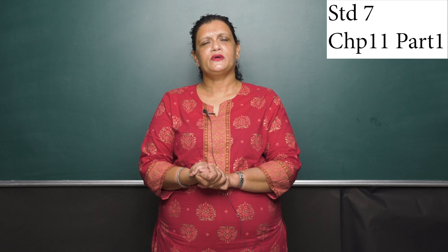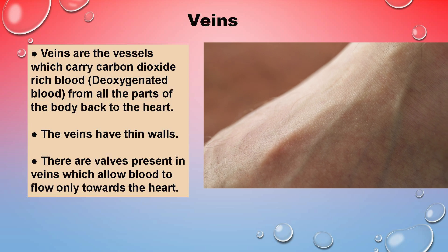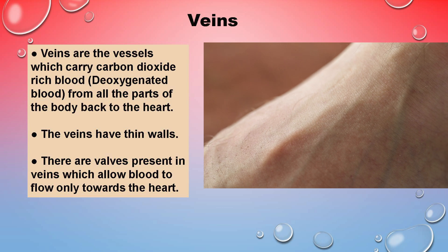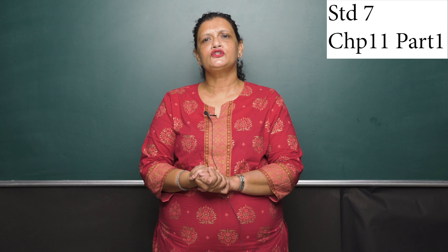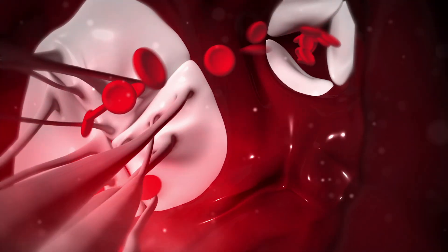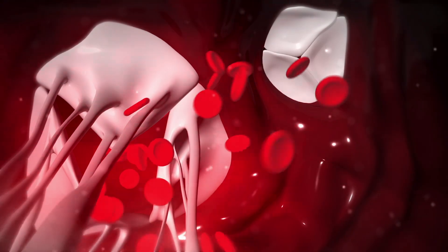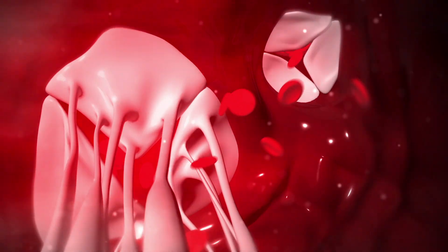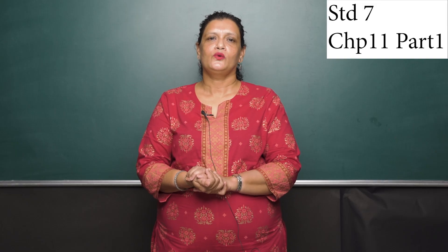The next blood vessel that we need to study are the veins. Veins are vessels which carry deoxygenated blood — that is blood rich in carbon dioxide — from the various parts of the body into the heart. This is assured by the presence of valves in the veins. These valves do not allow blood to flow backward but always flow towards the heart. The veins have thin walls.